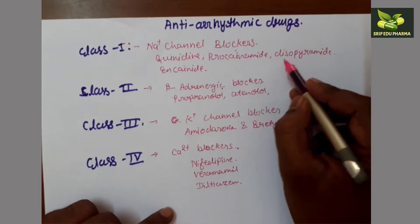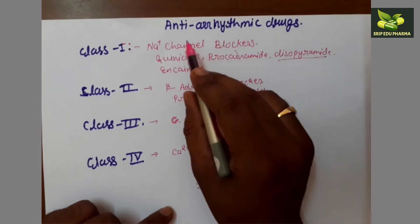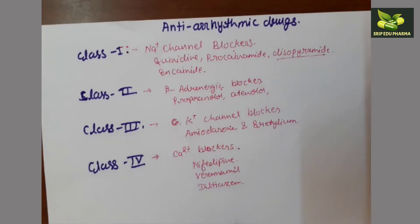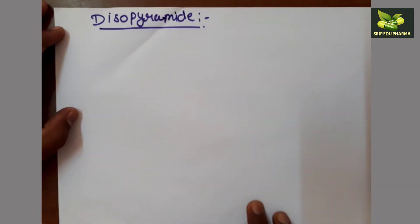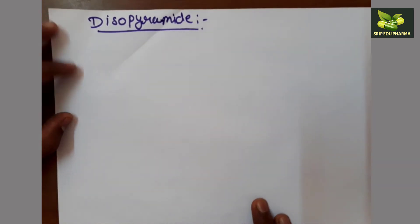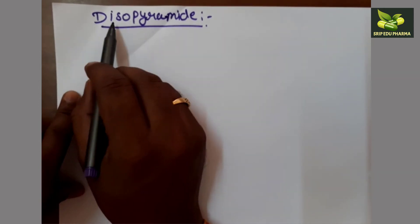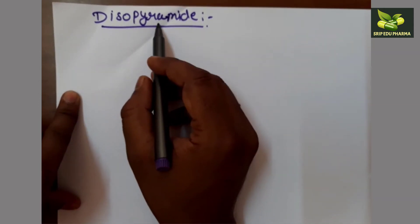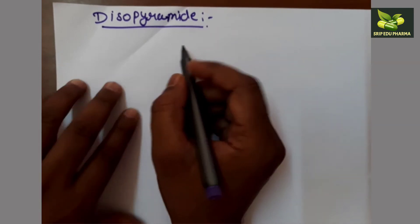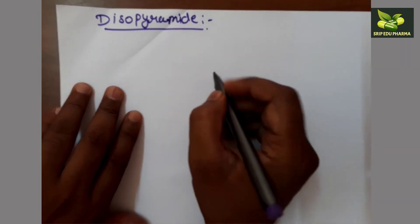Let's come to the synthesis and chemistry of disopyramide, which belongs to the sodium channel blocker category. As the name suggests, 'di-iso' refers to diisopropyl, 'pyra' refers to pyridine, and 'amide' comes from acetamide. So these three elements are essentially present in the structure.